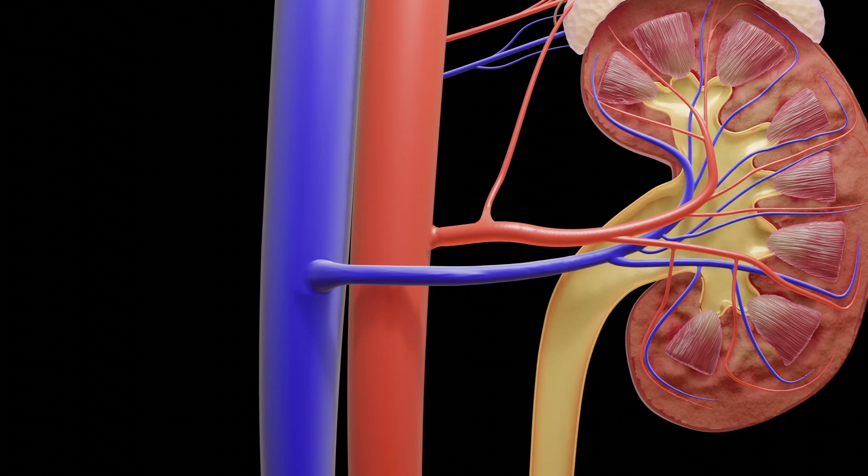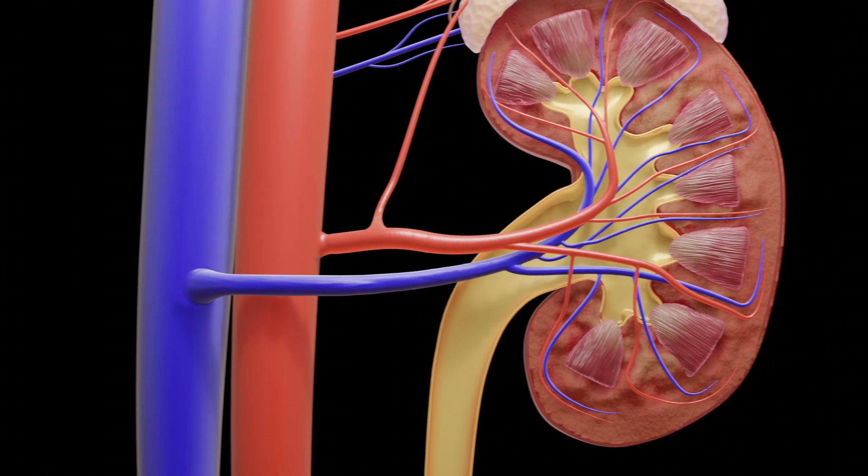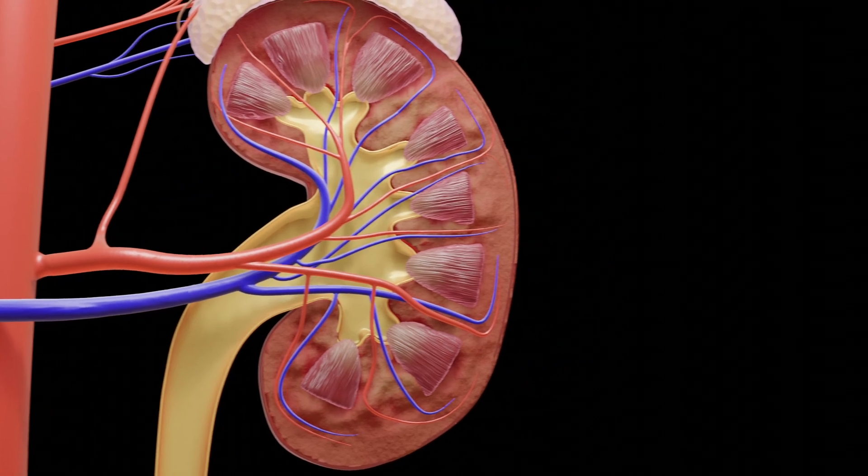Strictly speaking, filtration of the blood takes place in the nephron. Each kidney contains approximately 1 million of these small elements.